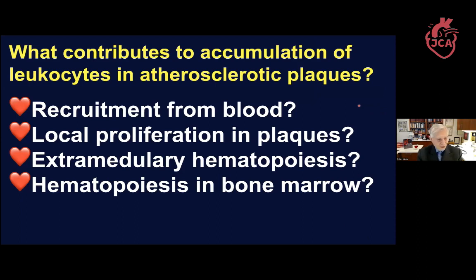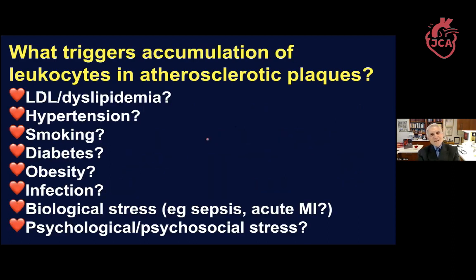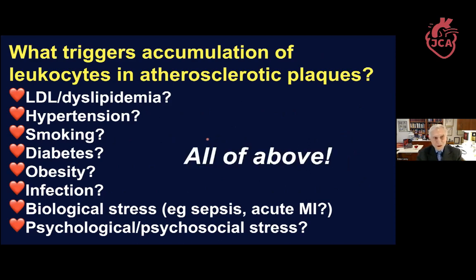What contributes to the accumulation of leukocytes? Is it recruitment from blood, local proliferation within plaques, extramedullary hematopoiesis, or hematopoiesis in the bone marrow? It turns out it's all of the above. There's a whole laundry list of traditional and emerging risk factors — all are associated with attracting or causing the accumulation of leukocytes in the atherosclerotic plaque.